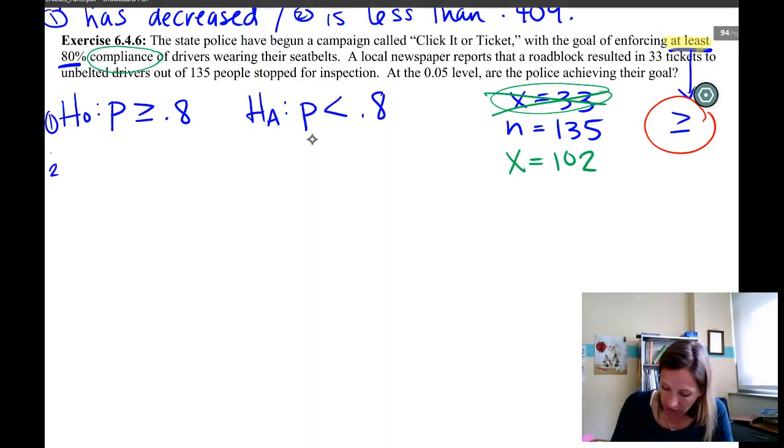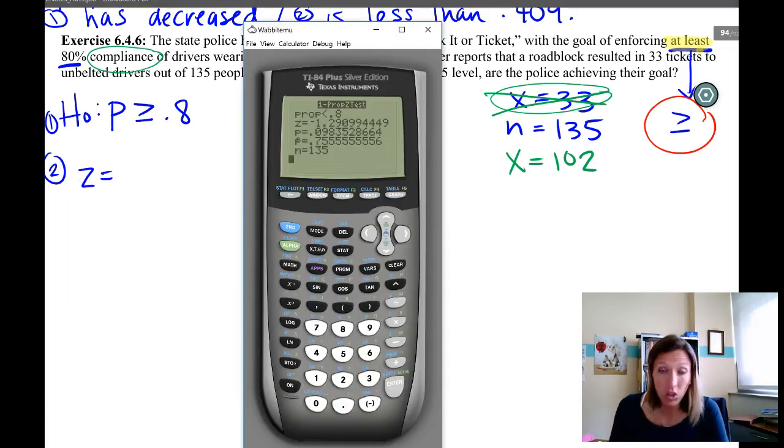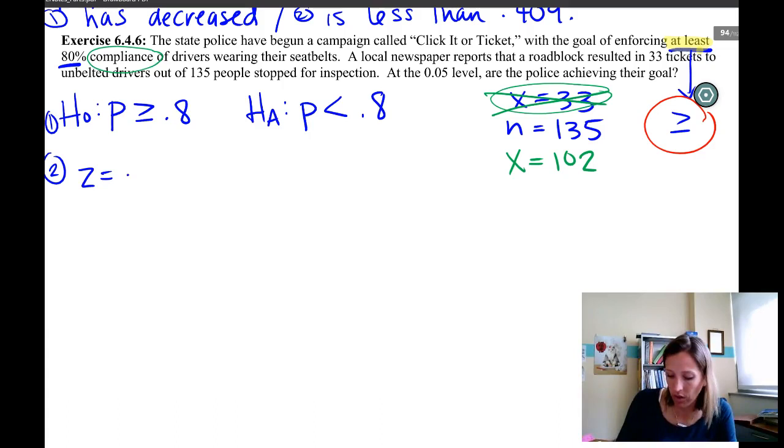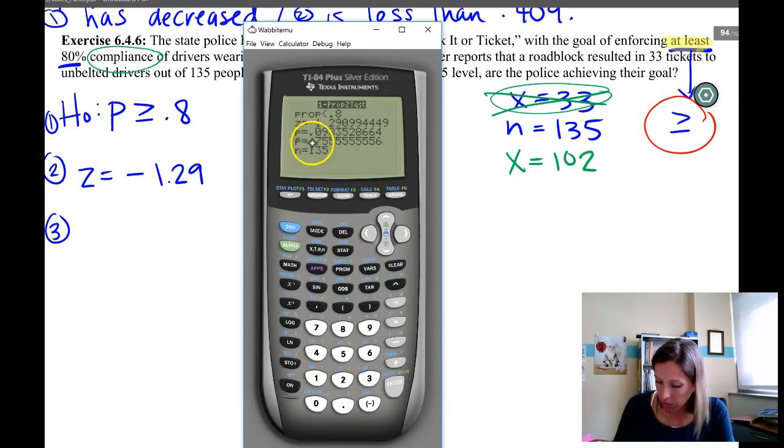Step one, step two, our z score, according to that, is negative 1.29. No reason to give more than two decimals for a z score, because the best you could look up in the table has two decimals. So standard convention is to just give two decimals for a z score. Three is our p value, which with our little emulator is super easy, 0.0984.